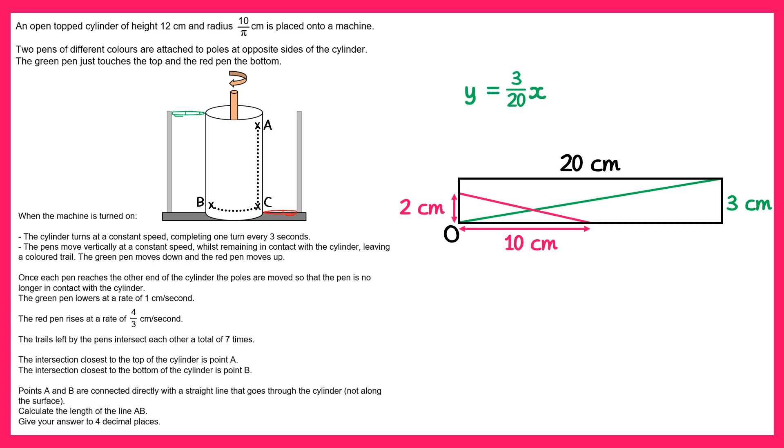For the red line the gradient's negative. The change in y here is 2, the change in x is 10, so 2 over 10 is a fifth, so it's negative 1 fifth. And it would cross the axis there which is the left side of that rectangle at plus 2. So if we treat the red line like it's a straight line graph, its equation is y equals negative 1 fifth x plus 2.